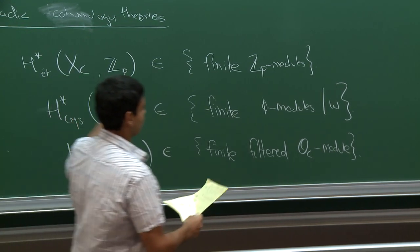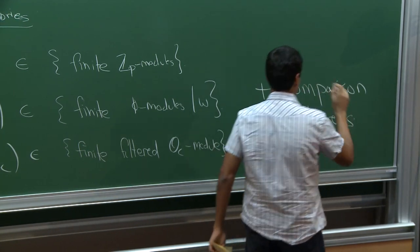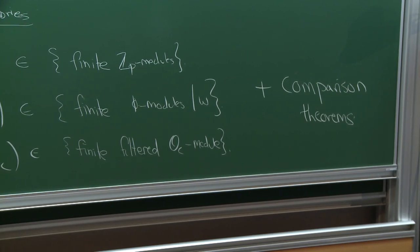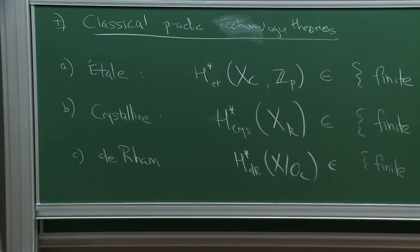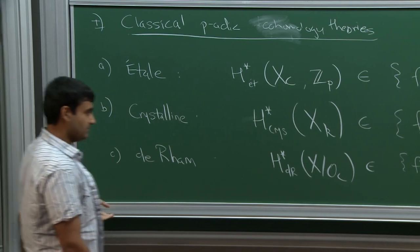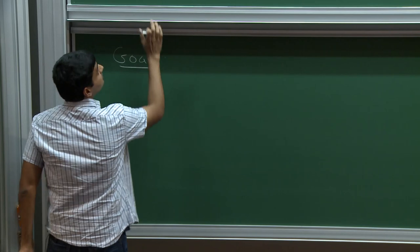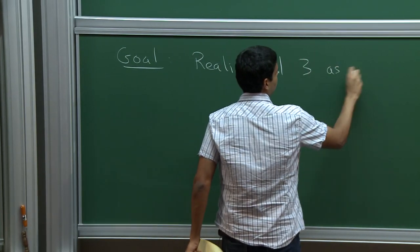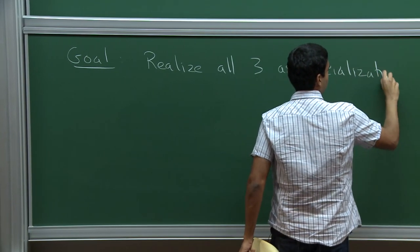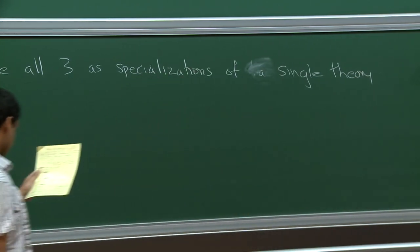These are the three theories I want to focus on. We know that there are various comparison isomorphisms relating different subsets of them. For example, Fontaine's de Rham conjecture tells you that A and C are essentially the same information after you extend scalars to B_dR. And B is the crystalline conjecture, and then B and C is the Berthelot-Ogus theorem relating crystalline with de Rham.